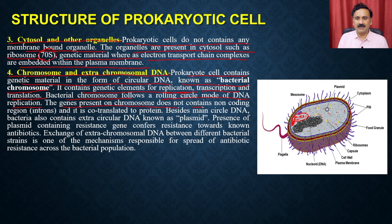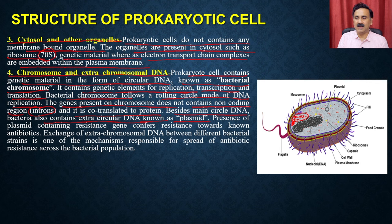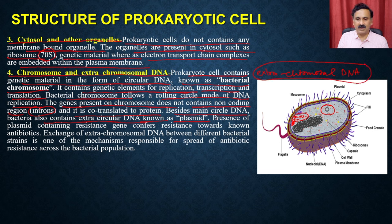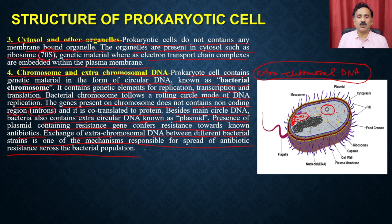Prokaryotic cells contain the genetic material in the form of a circular DNA known as the bacterial chromosome, which is different from the eukaryotic chromosome. It contains the genetic elements for replication, transcription, and translation. Bacterial chromosomes follow a rolling circle model of DNA replication. The genes present on the chromosome do not contain non-coding regions called introns and are co-translated to protein. Besides the main circular DNA, bacteria also contain extra-chromosomal DNA known as plasmids. The presence of plasmids containing resistant genes confers resistance towards antibiotics.